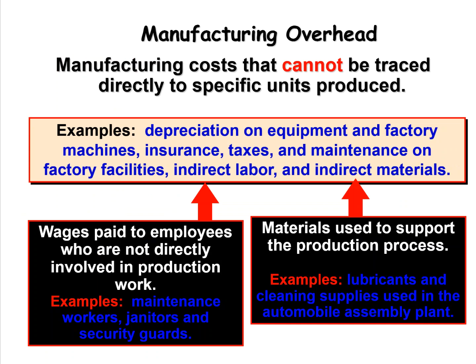Manufacturing overhead is where we capture all costs we cannot specifically trace to a specific product. This usually includes depreciation on equipment, factory machines, and the building; insurance; taxes; maintenance on factory facilities; and indirect labor and indirect materials. We take that indirect labor and indirect materials and add them into what's called manufacturing overhead.